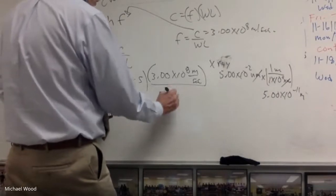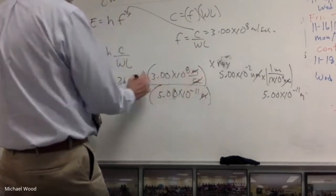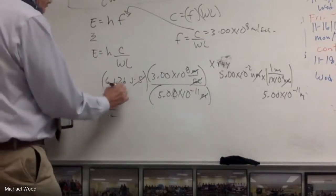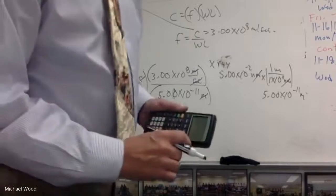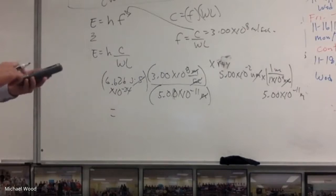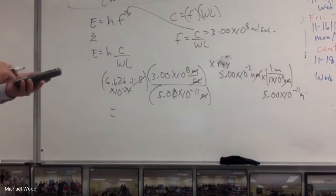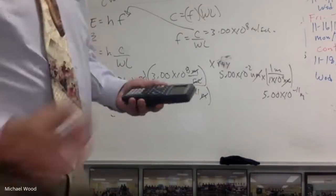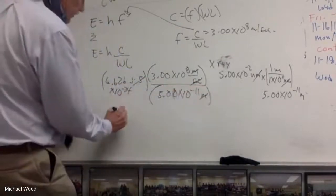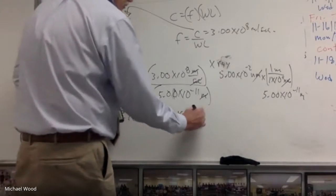Checking units: meters cancel, seconds cancel, and I'm left in joules — which is what I want. So: 6.626×10⁻³⁴ times 3.00×10⁸, divided by 5.00×10⁻¹¹. That gives 3.98×10⁻¹⁵ joules. That is the energy of an x-ray photon.